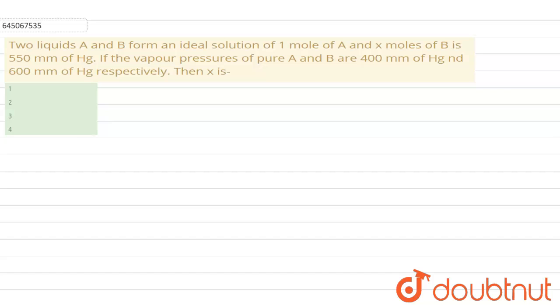Hello everyone, in this question it is given that two liquids A and B form an ideal solution of 1 mol of A and x mol of B, having total pressure that is 550 mm of Hg. If the vapor pressure of pure A and pure B are respectively 400 mm of Hg and 600 mm of Hg, then we have to find out value of x. Let's see how this question will be solved.